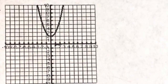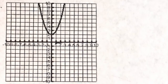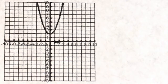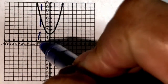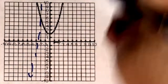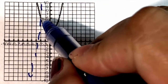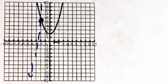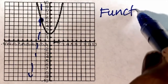How about this example? Is this graph a function? Let us use a vertical line test. Drawing the line anywhere on the graph, it crosses at exactly one point. Therefore, this is a function.